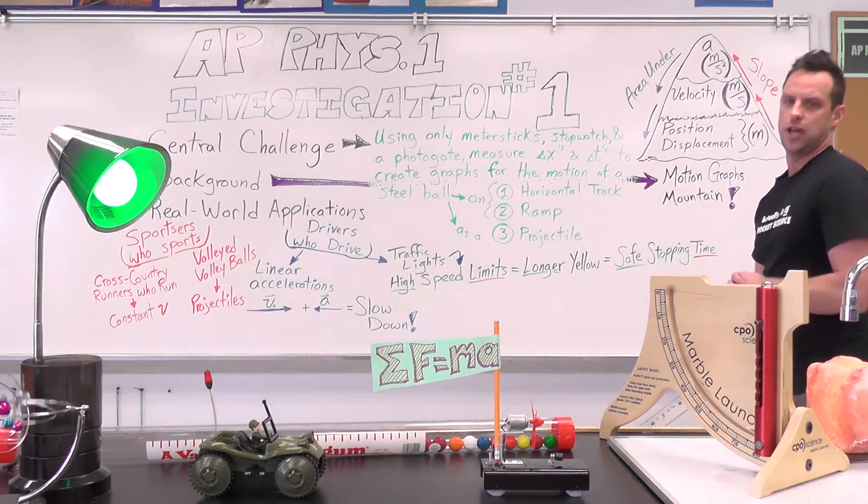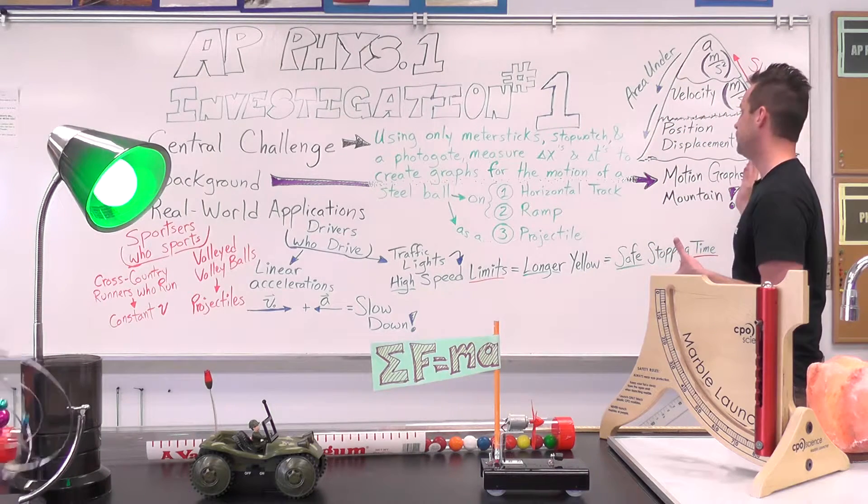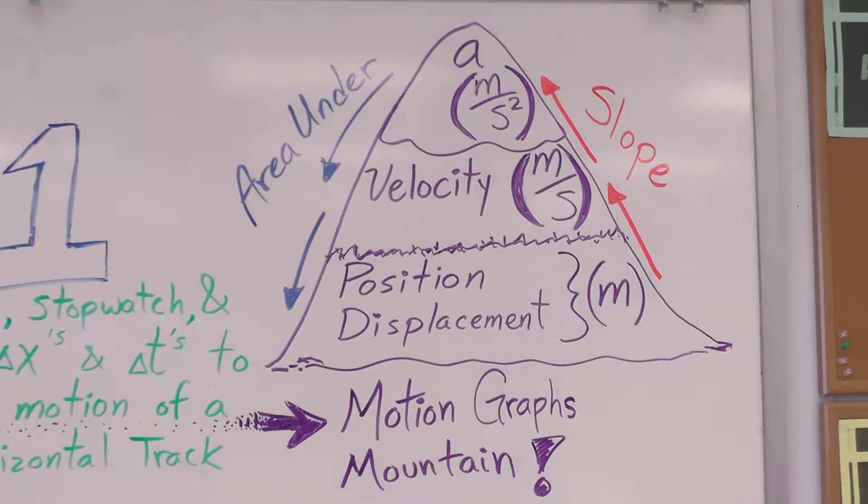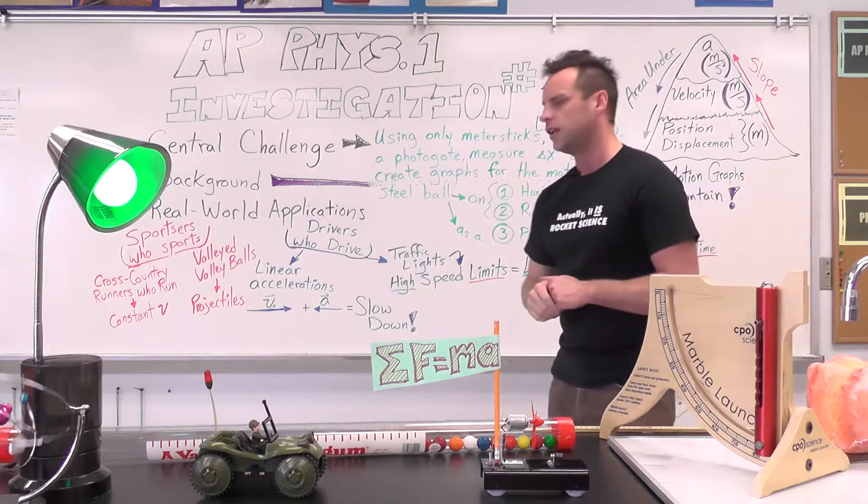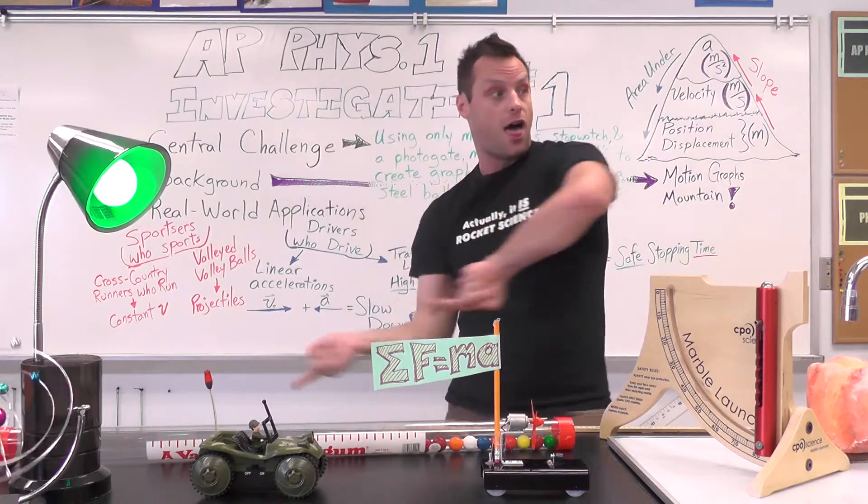Some background information that you should have coming into this lab. Here we have what I call the motion graphs mountain. We have three levels of motion when you're describing it. Acceleration measured in meters per second squared is a higher complexity of description of motion than velocity measured in meters per second. And then coming down to the base of the mountain, you have position or changing your position we call displacement, both of which would be measured in meters. More on that in class. Let's go take a look at what you're going to be working with in this lab. Follow me over to the lab.